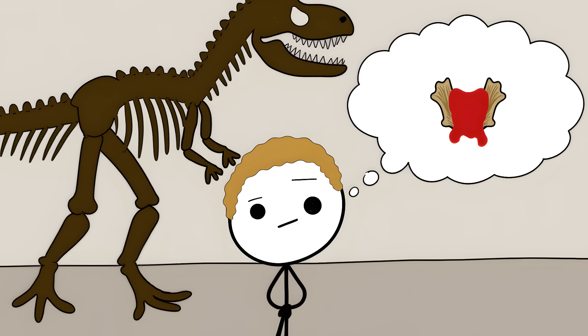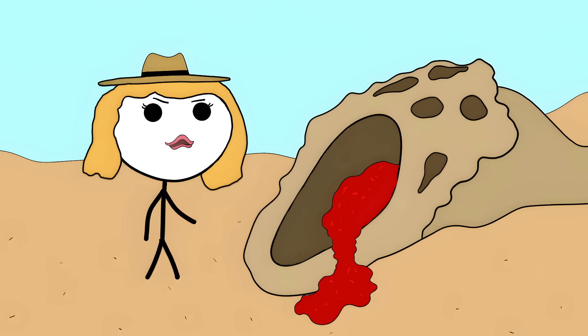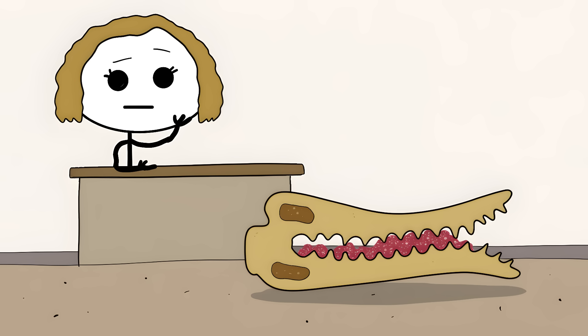Let's get right into it. Number 9. Dinosaur Goo. Imagine finding something squishy inside a 68-million-year-old T. rex bone.